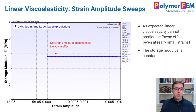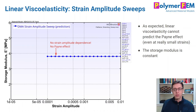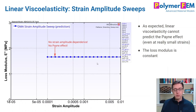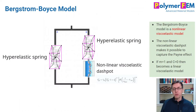Here's the core problem: for a linear viscoelastic material, storage modulus does not depend on strain amplitude — that's the definition of linear viscoelasticity. Similarly, the loss modulus is independent of strain amplitude. So we don't see the Payne effect, which is the drop in storage and loss modulus with strain amplitude. How do we fix this?